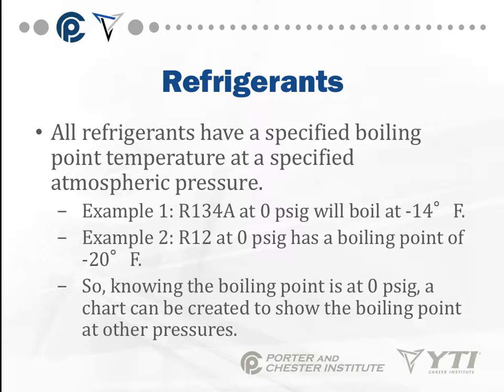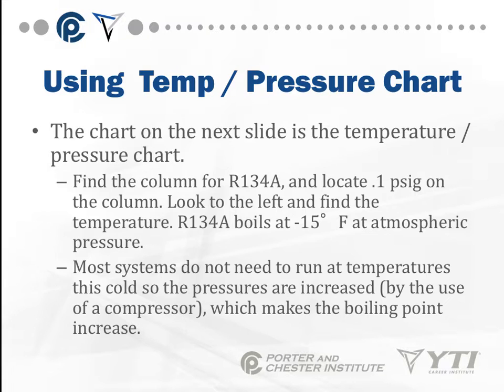Gauge pressure is normal atmospheric pressure. So 0 PSIG is 14.7 PSIA, which is absolute pressure. Knowing the boiling point at 0 PSIG, a chart can be created to show the boiling point at a variety of other pressures, and that's called the temperature pressure chart.